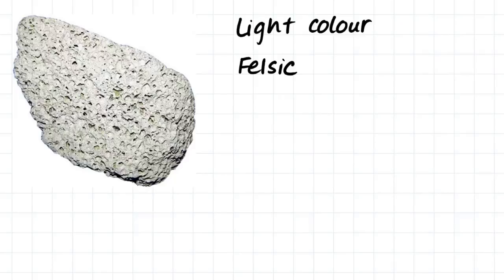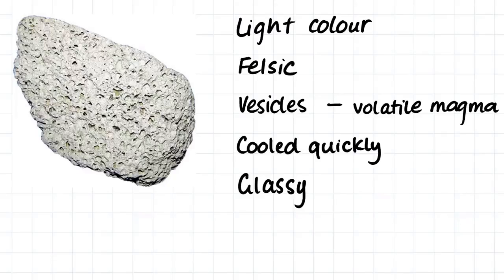This sample here is light in color and therefore felsic. The vesicles in the rock indicate that it was a volatile magma which released a lot of gases. For the vesicles to be present, it must have cooled very quickly and we can say that it is a glassy rock. This sample is pumice.